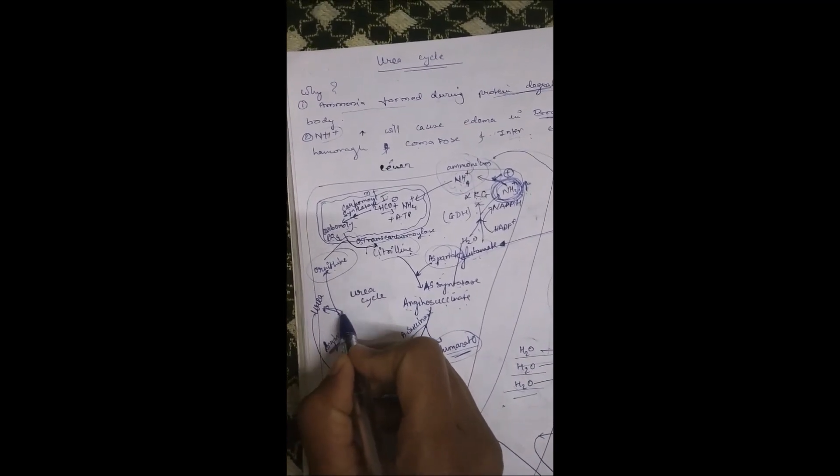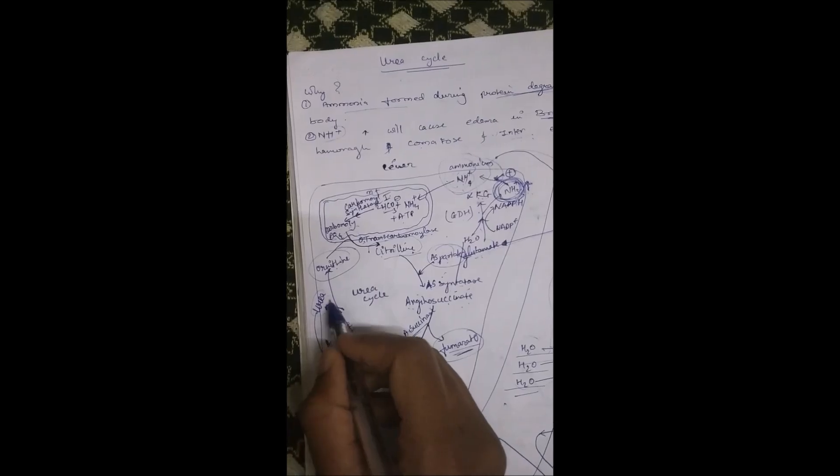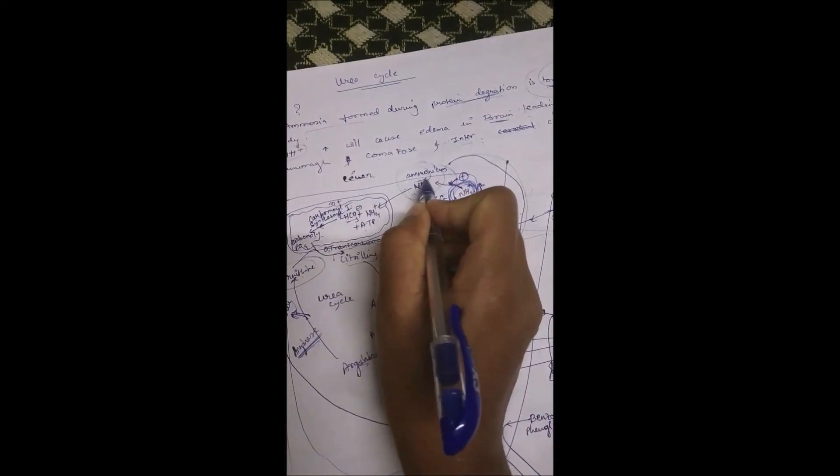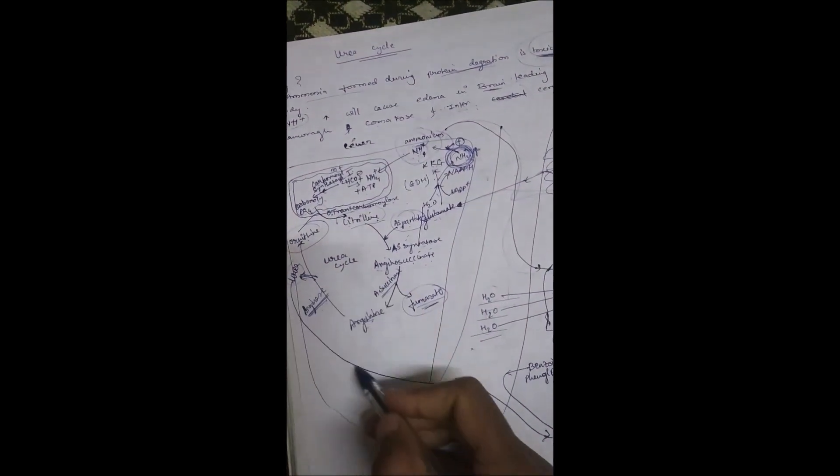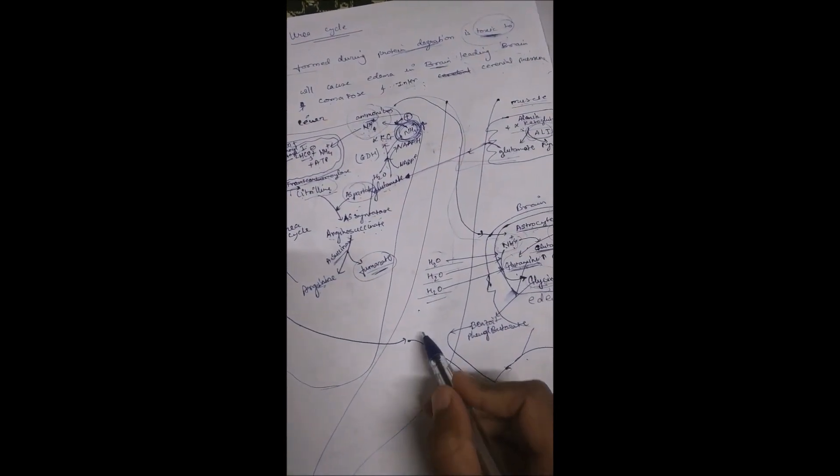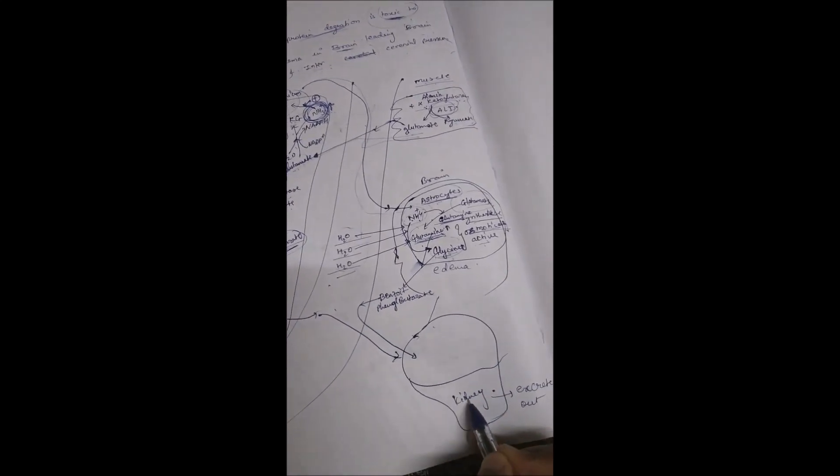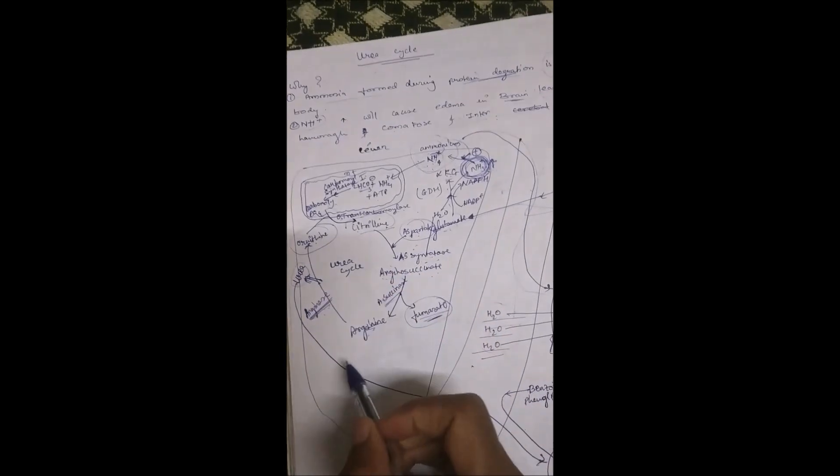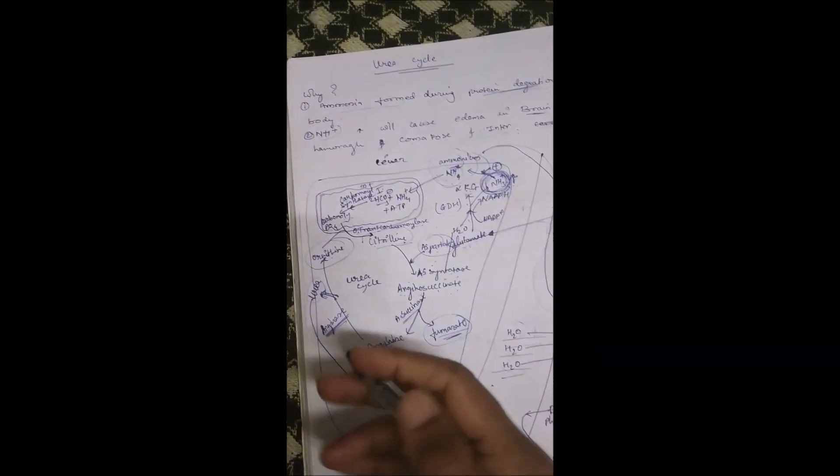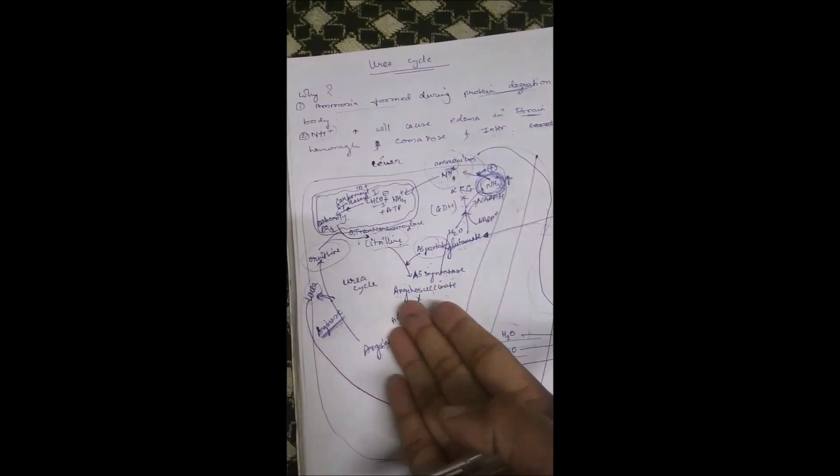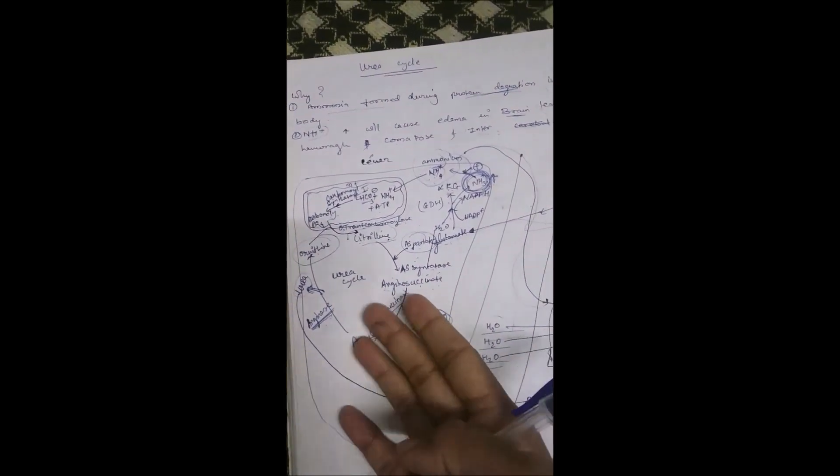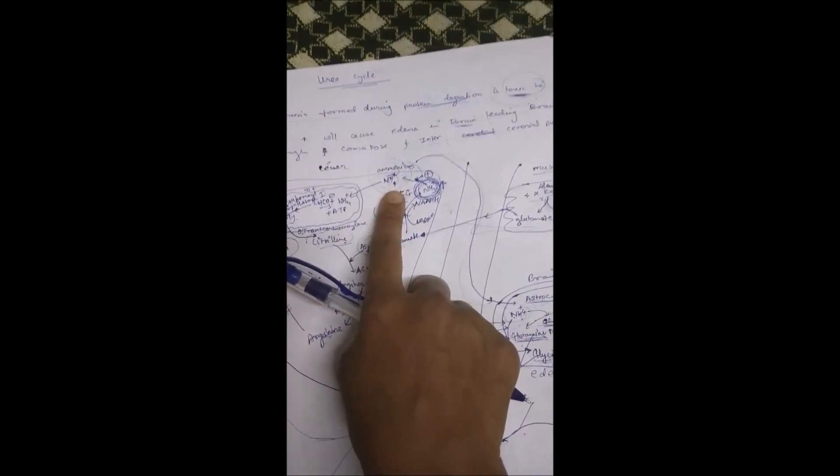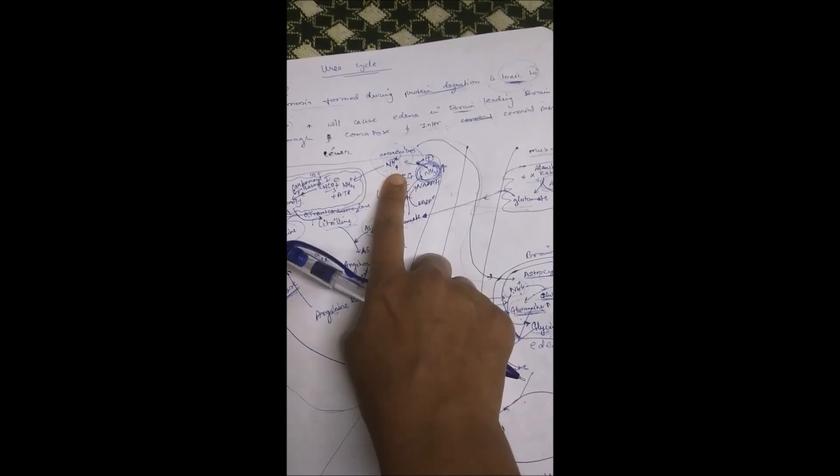This urea is less toxic than ammonium. This urea will get inserted into blood vessels, then taken into the kidney cell. The kidney cell will excrete out this urea. There is very little or less utilization of water in urea excretion, whereas to remove ammonia we require lots of water.